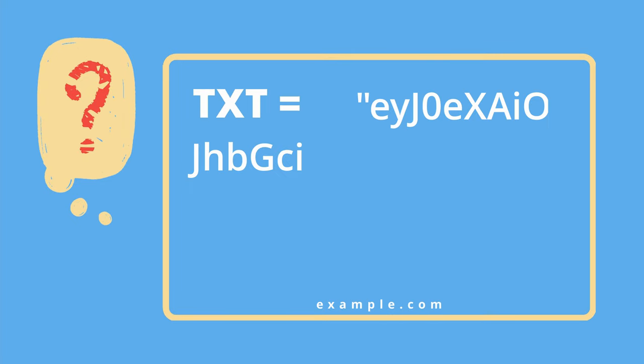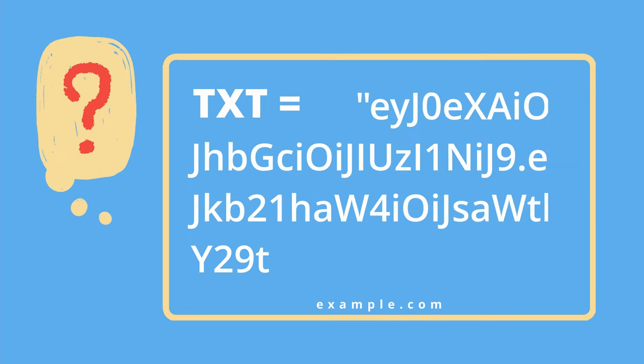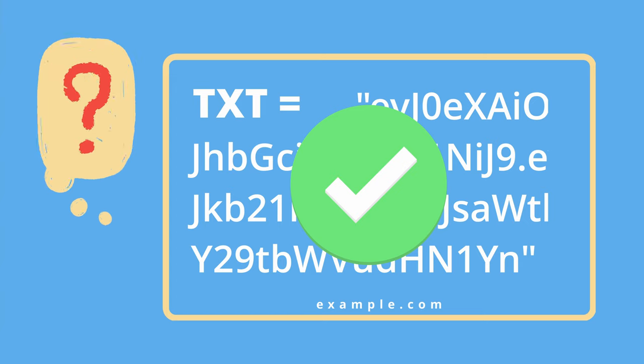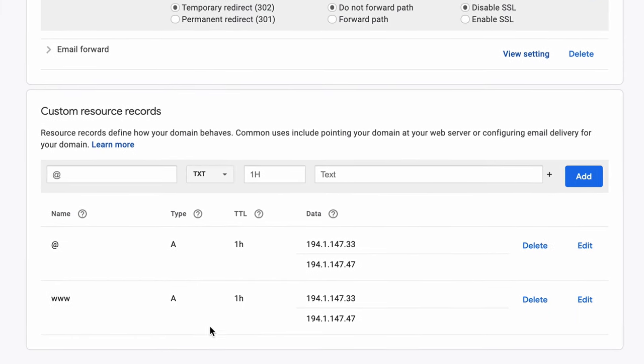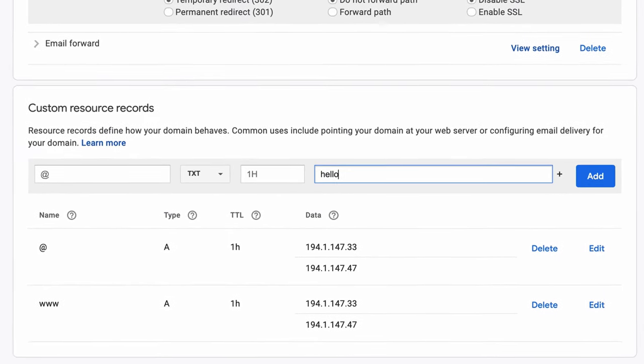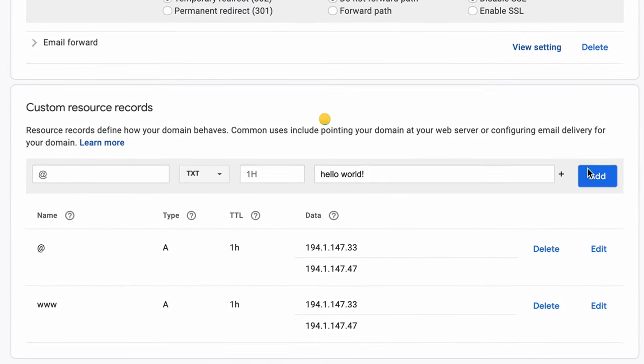When the third party queries this text record and sees the expected value, it can safely assume that you are indeed the owner of the domain name. So let's go ahead and do an example. In this case, I'll add a text record to tonyteaches.tech with the value of hello world. The cool thing is anyone, including you, can query the DNS text record for this and pretty much any other domain name.